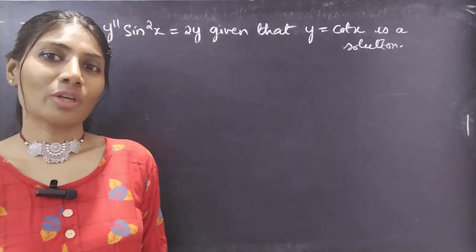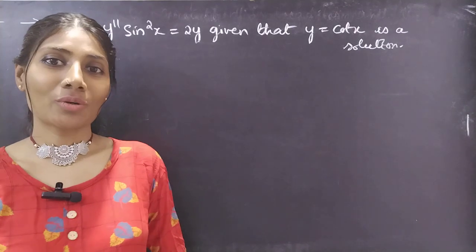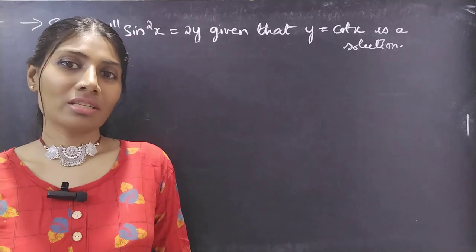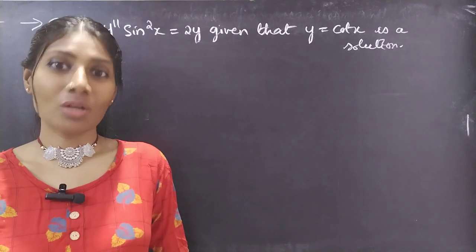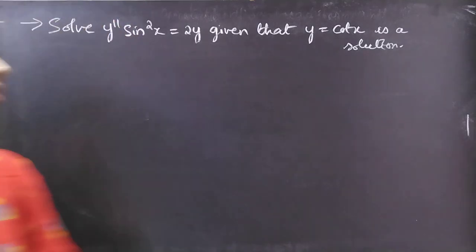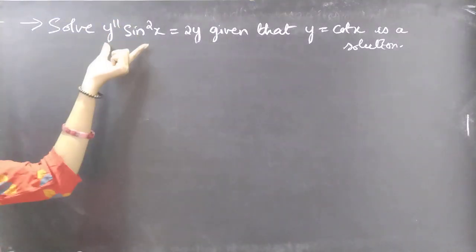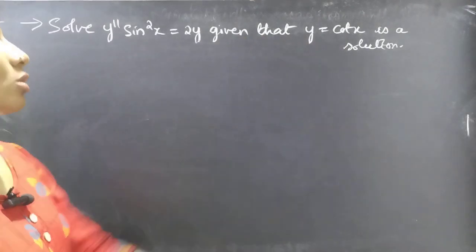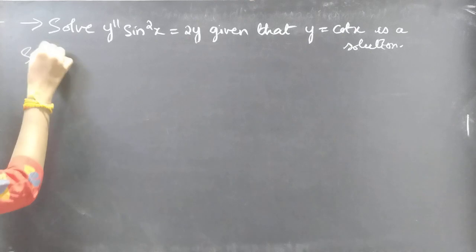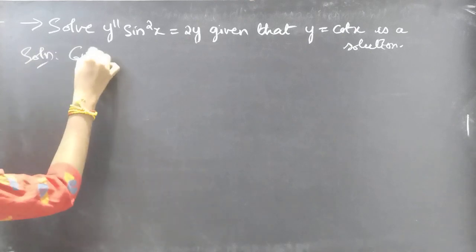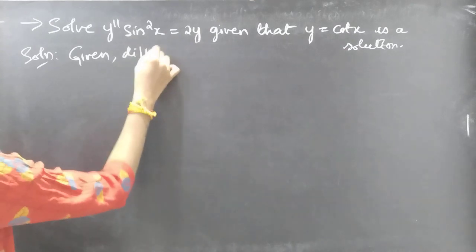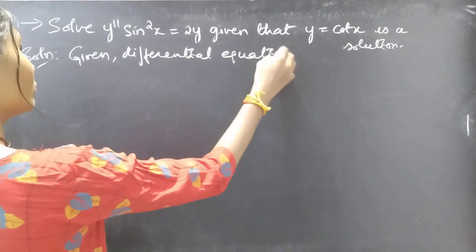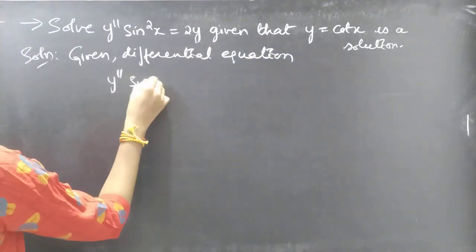Hello everyone, this is Jay Kalpana. In this video we are going to solve a differential equation from higher order linear differential equations with variable coefficients. We are going to solve the second order linear differential equation using the reduction of order method. The problem: solve y'' sin²x = 2y, given that y = cot x is a solution.